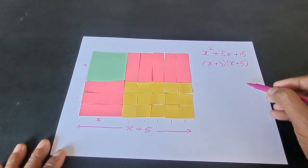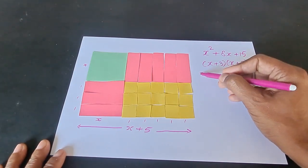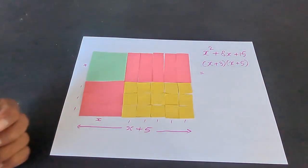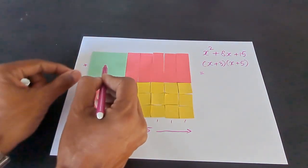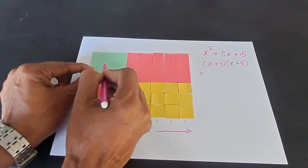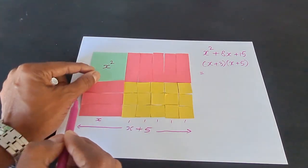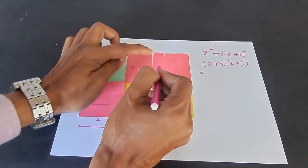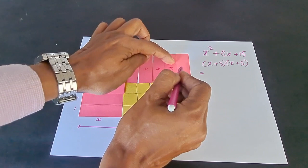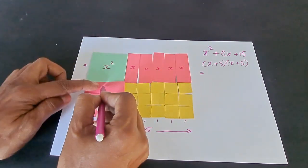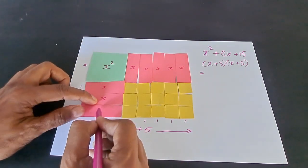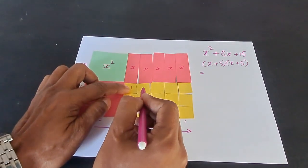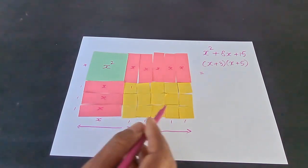Now, let us check how we can find the area by combining the individual areas. What is the area of this square? It is x by x, right? So, this is x square. This is x by 1. So, this is x, x, x, x and x. This is x, this is x and this is x. And all these small pieces are 1 square units each.